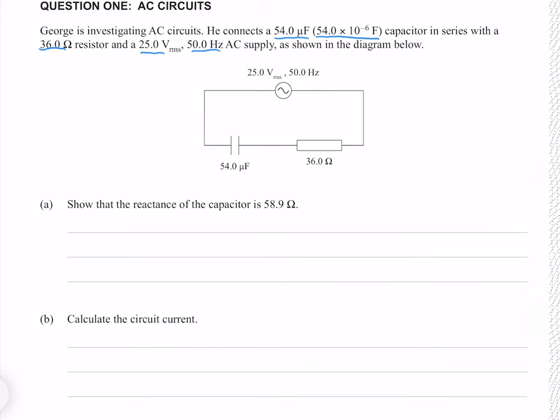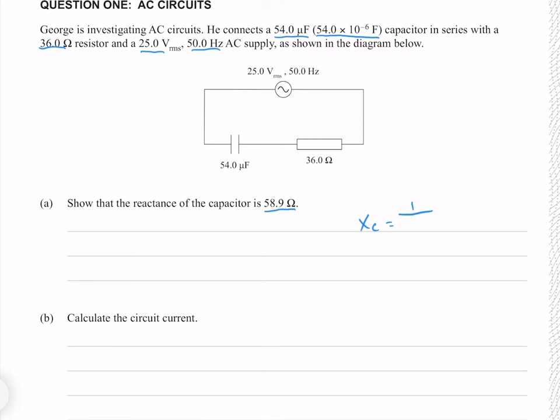Show that the reactance of the capacitor is 58.9 ohms. Capacitor reactance is 1 over omega C, where C is our capacitance, but we don't know our angular frequency. The equation for that is 2 pi F, where F is our frequency. Making that substitution and putting our numbers in gives 58.946 ohms, or 58.9 to 3 significant figures, which is what we're trying to find.